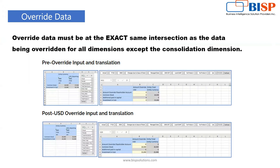For override data, your override data must be at the exact same intersection as the data being overridden, for all dimensions except the consolidation dimension. For example, if we already have 20,000 in Common Stock and we want to override it, we must precisely choose our POV at the same intersection — for a particular currency like USD — so the overridden amount is accurately input at the correct intersection in Smart View.